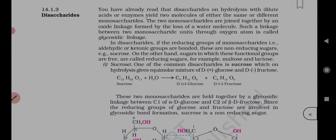Lactose is more commonly known as milk sugar since this disaccharide is found in milk. It is composed of beta-D-galactose and beta-D-glucose. The linkage is between C1 of galactose and C4 of glucose — a beta-1,4-glycosidic linkage.